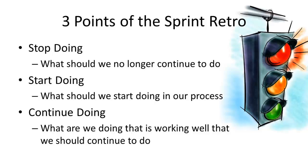The next is things we should start doing — what should we start doing in the process that will make things run smoother? And finally, what are the things that we should continue doing? What are the things that we have changed recently that are working well that we want to continue doing? You don't need to call out everything you're going to continue doing, as most processes are assumed to be in place. This section is specifically to call out things that have changed recently and worked well.